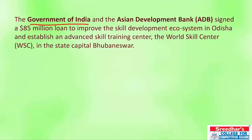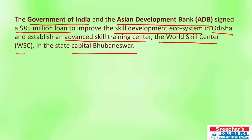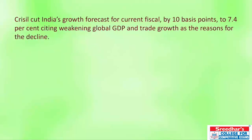The Government of India and the Asian Development Bank have come together to improve the skill development ecosystem in Odisha and to develop an advanced skill training center — the World Skill Center — in Bhubaneswar. For this, ADB has sanctioned $85 million for the state of Odisha.